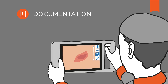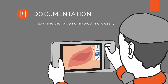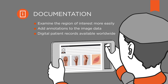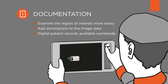With a digital image, the clinician can examine the region of interest more easily than by looking through an optic attached to a device. Also, the clinician can add annotations to the image data so that suspicious regions can be re-identified and tracked over time. Digital patient records can store all these images and information so that they are available for clinicians worldwide.